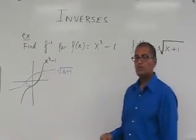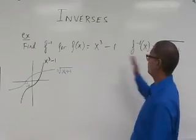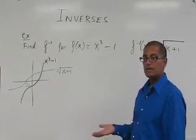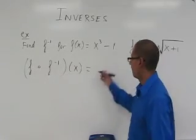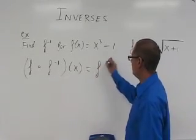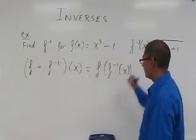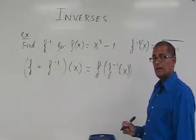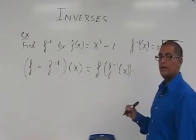So one property we want to show is that when we compose these two functions we should get back x. So let's do that. So f of f inverse of x means f composed with f inverse of x. And that means you substitute f inverse into f. So if we do that, what are we going to have?